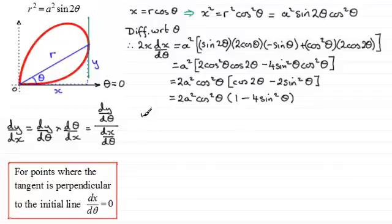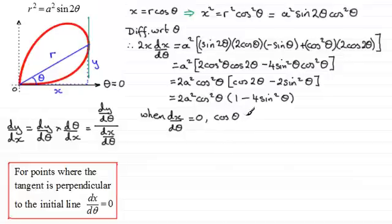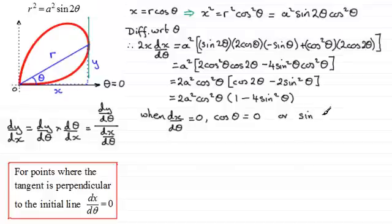When dx/dθ equals zero, either cos θ equals zero, or 1 minus 4 sin squared theta equals zero. Rearranging the second equation for sin squared theta and taking the square root, sin θ equals plus or minus one half.